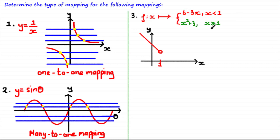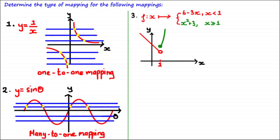Now let's draw the second piece of the mapping using the same method. We draw x² + 3 for all values of x, where the y-intercept is 3, then adjust the graph by removing the part that doesn't satisfy the inequality, leaving us with x² + 3 for x ≥ 1. Since this is a non-strict inequality, we represent it on the graph using a closed circle. We've now completed the drawing of this piecewise mapping.